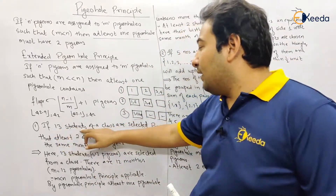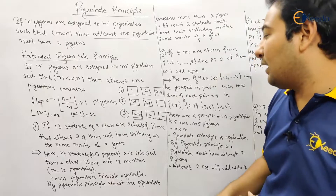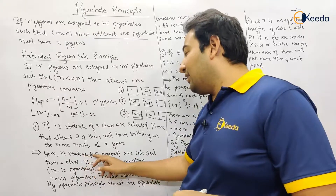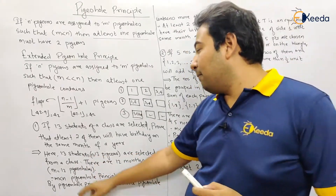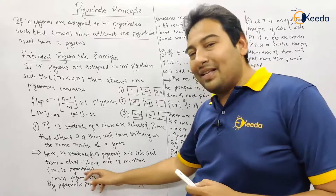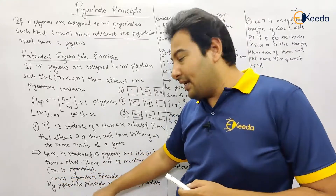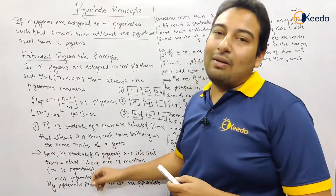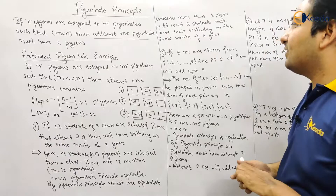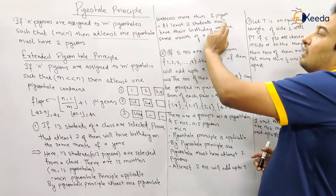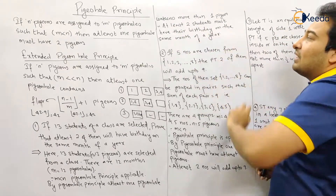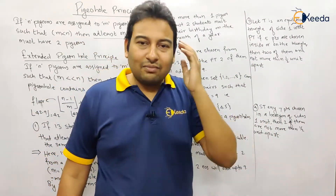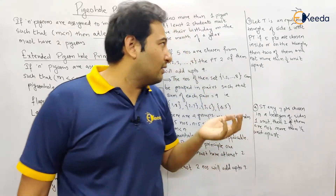Obviously, if 13 students each try to have a different birth month, there are only 12 months, so at least one month must have two students born in it. There is even a possibility that all students share the same month. Story over. Similarly, for eight students selected from a class: prove that at least two will have their birthday on the same day of a week. n = 8 pigeons, m = 7 pigeonholes (days). m < n, so Pigeonhole Principle applies.